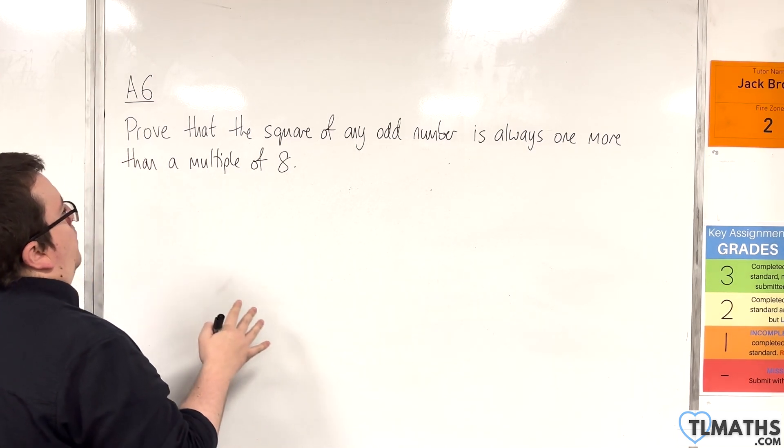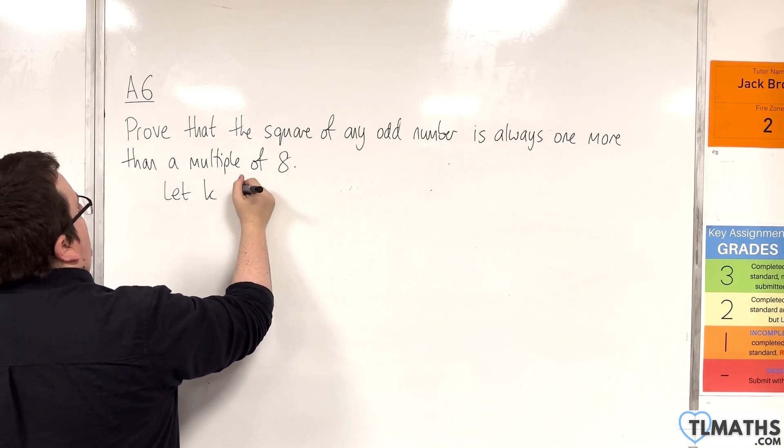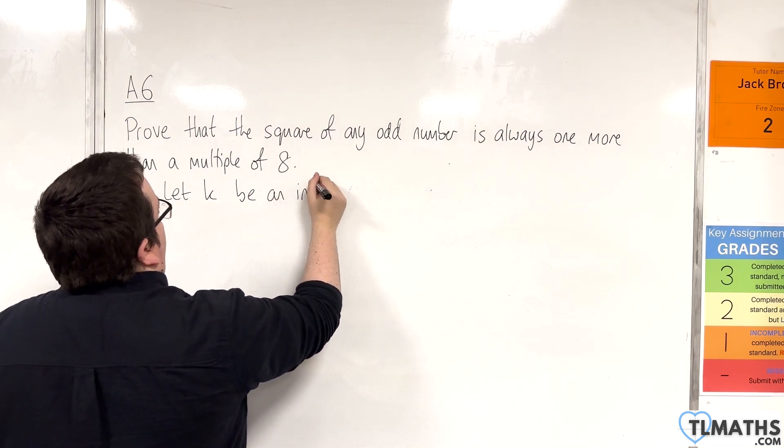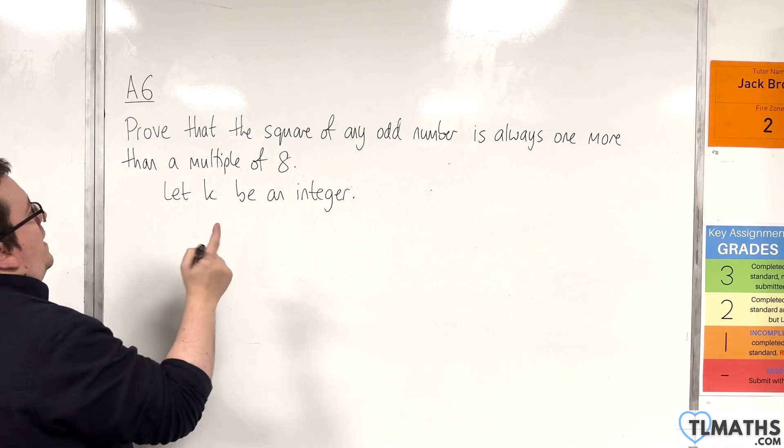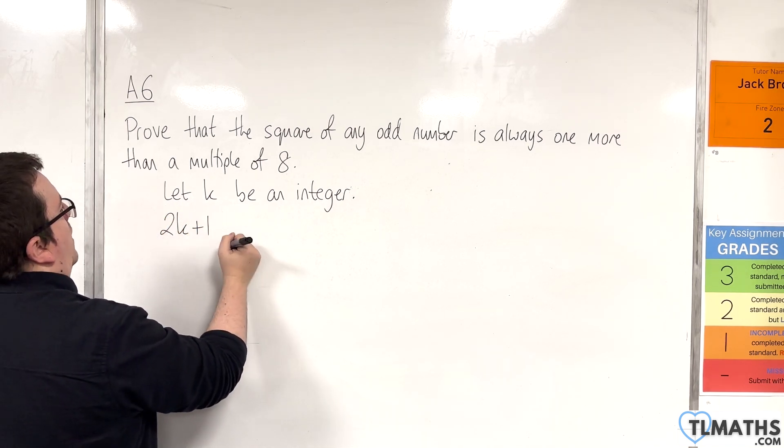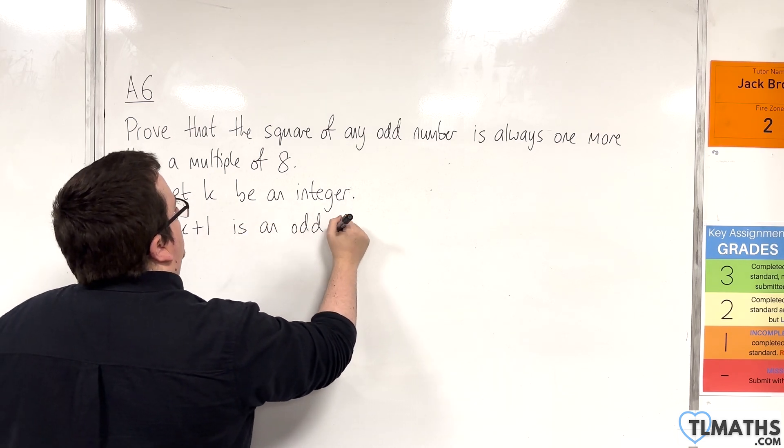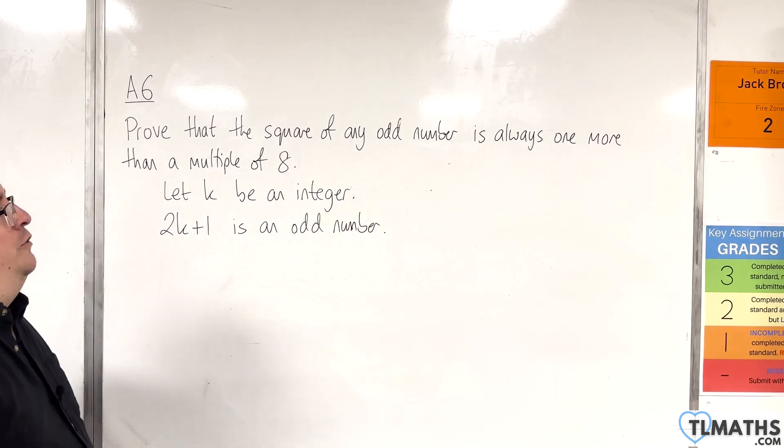The first thing we would want to do is identify k. Let k be an integer. Then 2k + 1 is an odd number. So we're going to use 2k + 1 to represent any odd number.